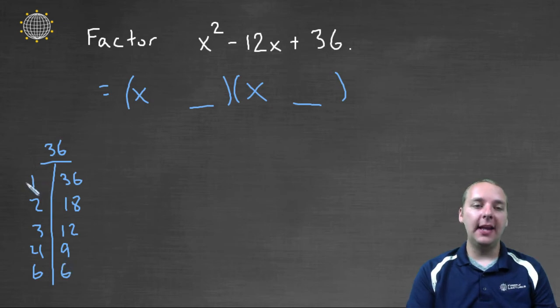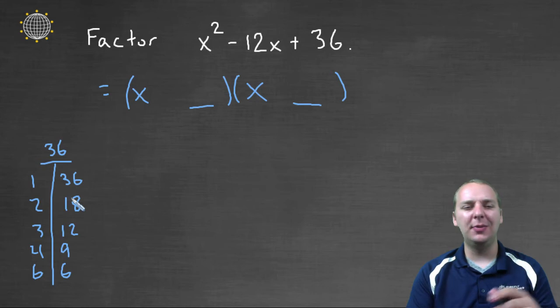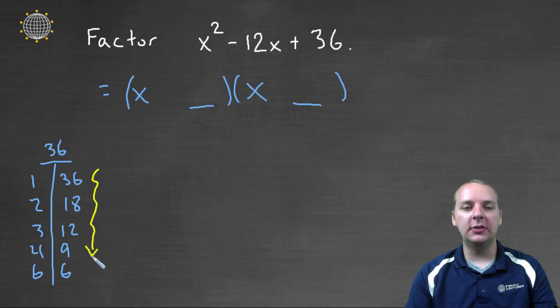as well as the negative versions like -1 and -36, -2 and -18, but that's going to make your list really long. So let's just leave our list like this and let's scan our list.